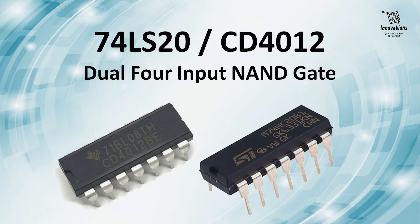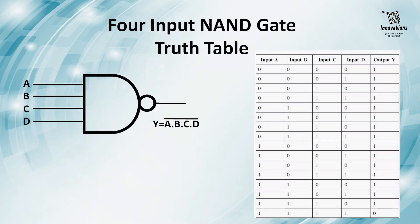Let us now have a quick look at the symbol and the truth table. This is the symbol of a 4-input NAND gate where A, B, C, D are the inputs and output Y equals A.B.C.D complement. That is the complement of logical multiplication of A, B, C and D. In simple words, it's a complement or inversion of a 4-input AND gate.